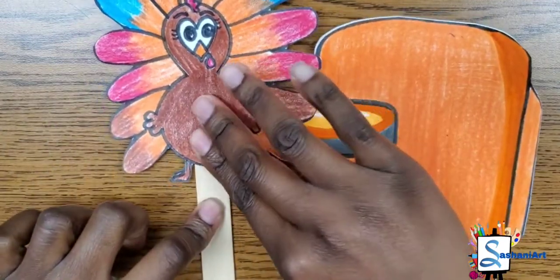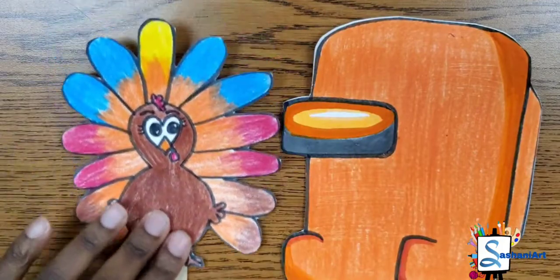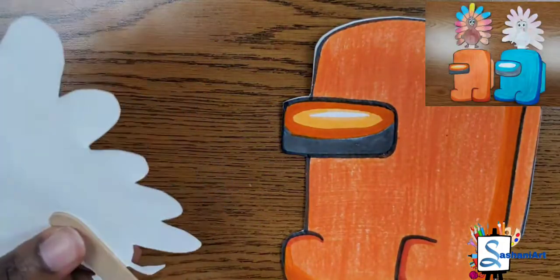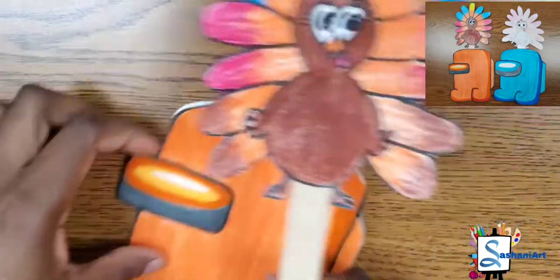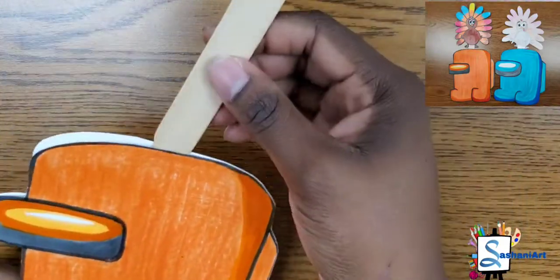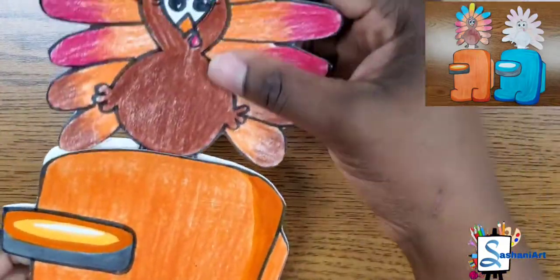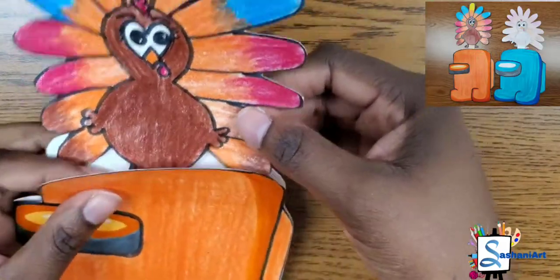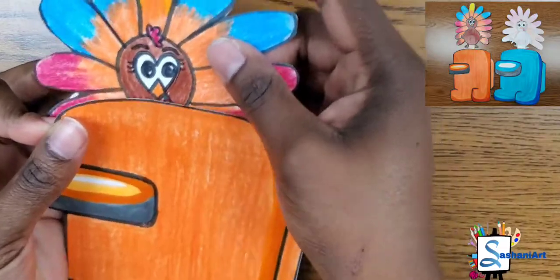Gently press down on your paper and massage it on the popsicle stick so that it holds firmly. Now our next step is for us to put our peacock inside the middle of our Among Us character so that we can pull it down and up so that it can pop up to create a puppet effect.